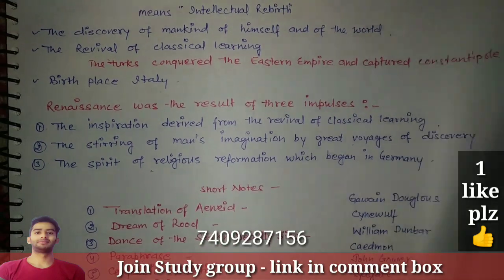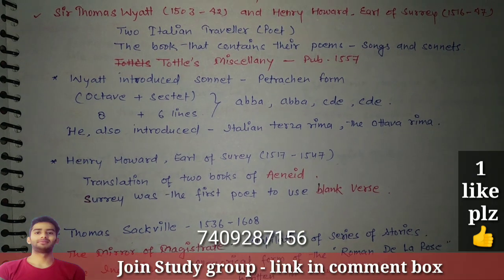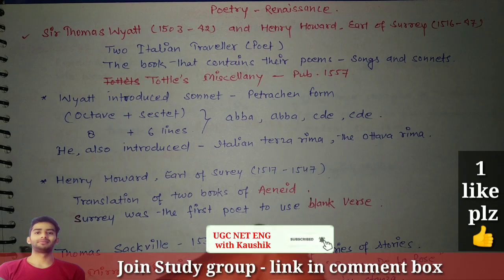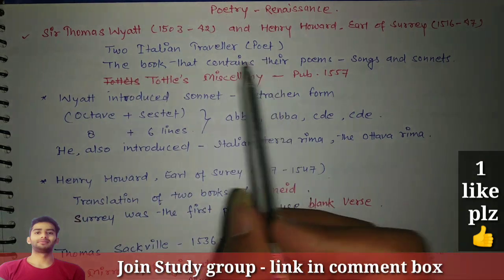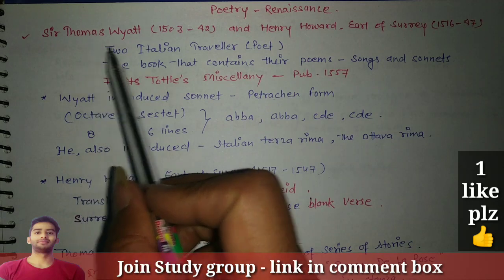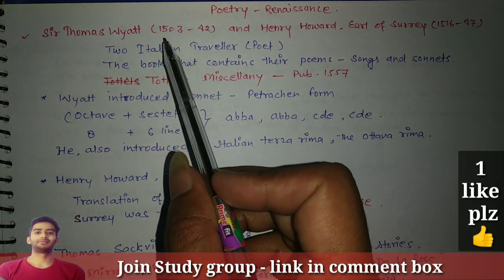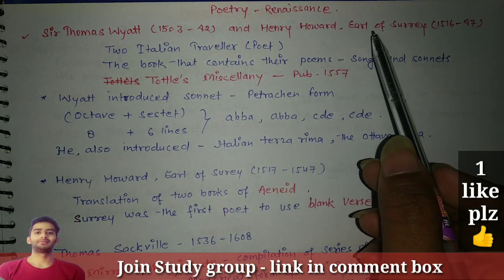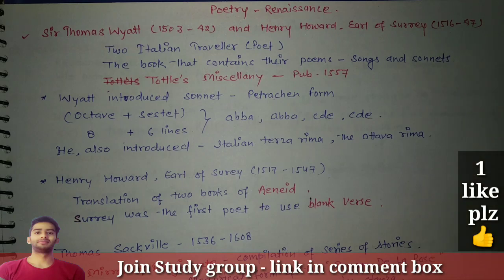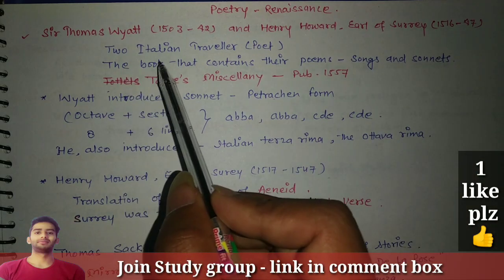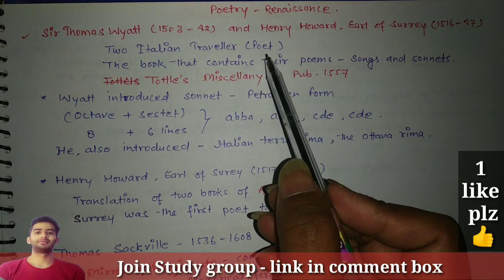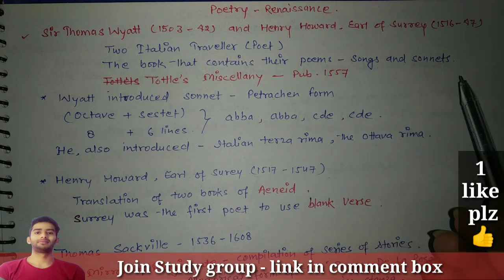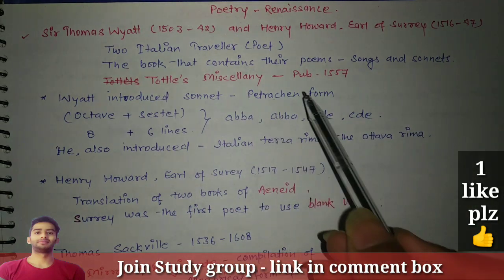Now let's talk about the poetry section in the Renaissance. This lesson starts with Sir Thomas Wyatt, who lived from 1503 to 1542, and Henry Howard, who was the Earl of Surrey, from 1516 to 1547. They both were Italian travelers and also poets. The book that contains their poems is called 'Songs and Sonnets,' and we call it Tottel's Miscellany.